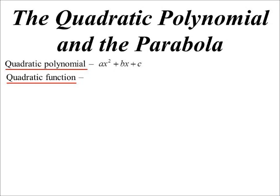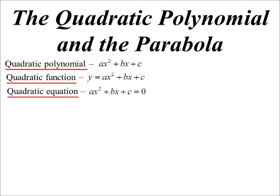If we make it equal to another pronumeral, usually y, now it becomes the quadratic function. But if we make it equal to a number, and with quadratics usually that's equal to zero, then it becomes a quadratic equation. They're all quadratics, but technically that's the difference between the three things.